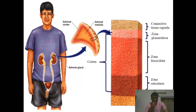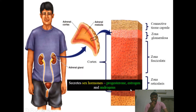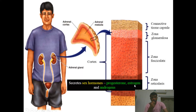The third layer is zona reticularis — 'reticul' means network. It contains irregular cells that make a network-like structure, which is why it is called reticularis. This layer synthesizes sex hormones. The major sex hormones of the body are synthesized in the gonads — estrogen and progesterone in the ovary, and testosterone in the testes — but in minor amounts, progesterone, estrogen, and androgen are also synthesized in the adrenal cortex, and are responsible for maintenance of secondary sexual characteristics.